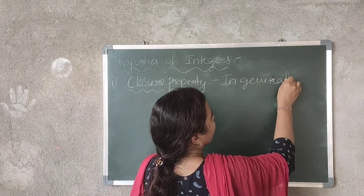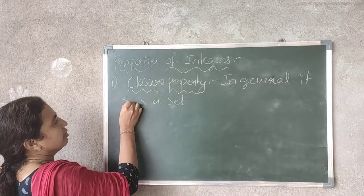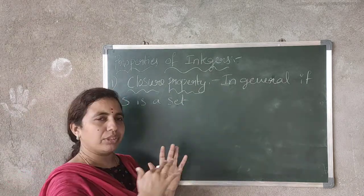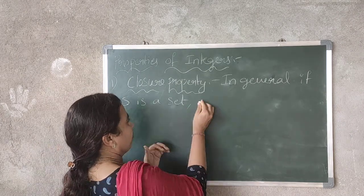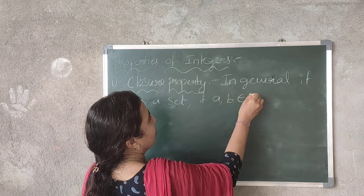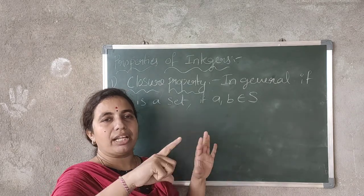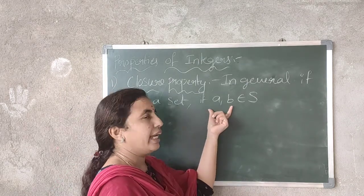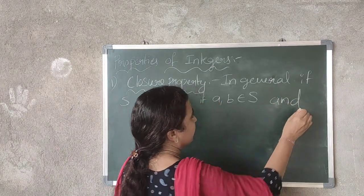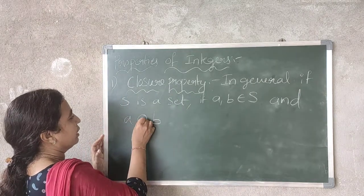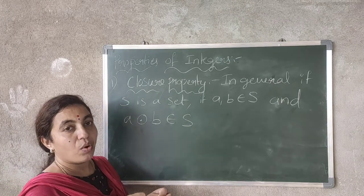In general, if S is a set of numbers, and from that if you consider any two elements — if A and B belong to S, which means A and B are any two elements of S. Now, this uses a binary operation, meaning plus, minus, multiply, and divide. All come under this symbol.